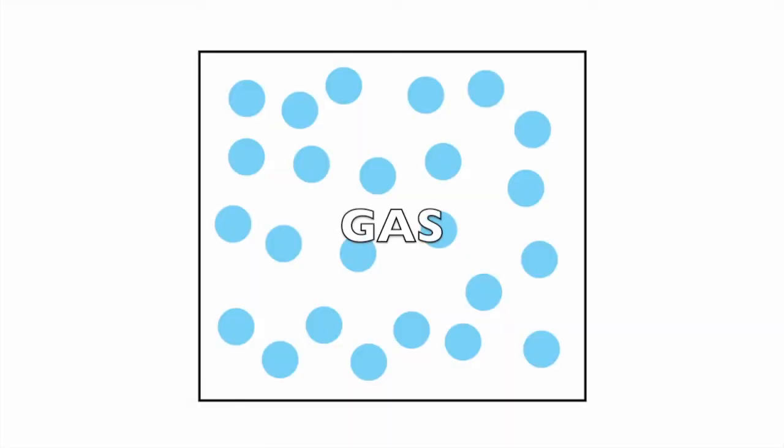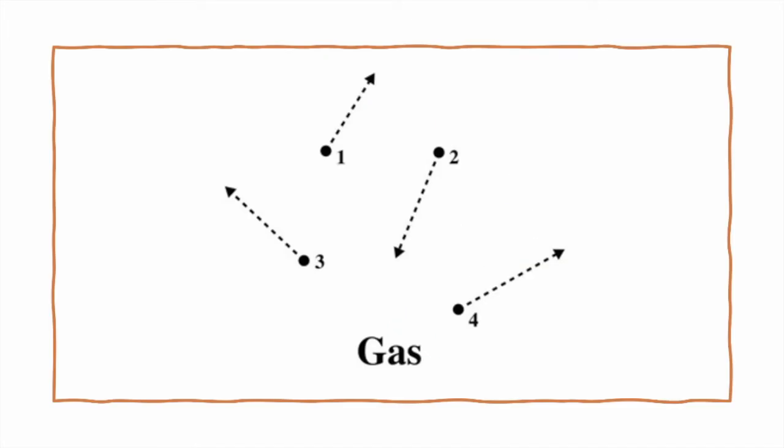With gas particles, these should spread out all around the container to fill the space. Sometimes arrows are included to represent temperature, especially if you're looking at things like kinetic molecular theory.